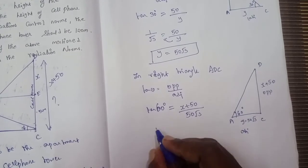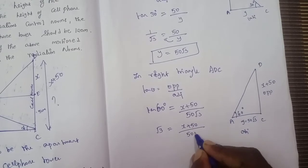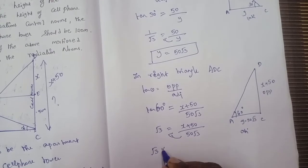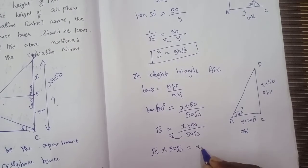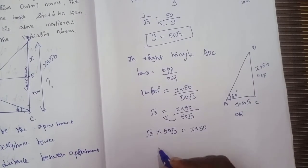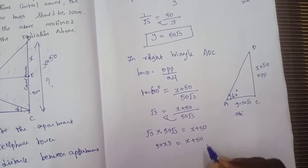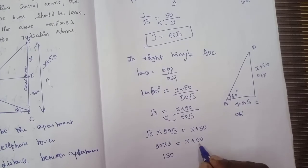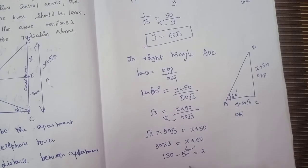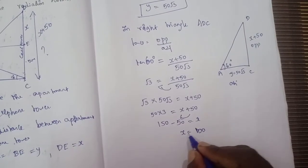Tan 60° equals root 3, so root 3 equals (x plus 50) by 50√3. Multiplying both sides: root 3 times 50√3 equals x plus 50. Root 3 times root 3 is 3, so 50 times 3 is 150. Therefore 150 minus 50 equals x, so x equals 100.